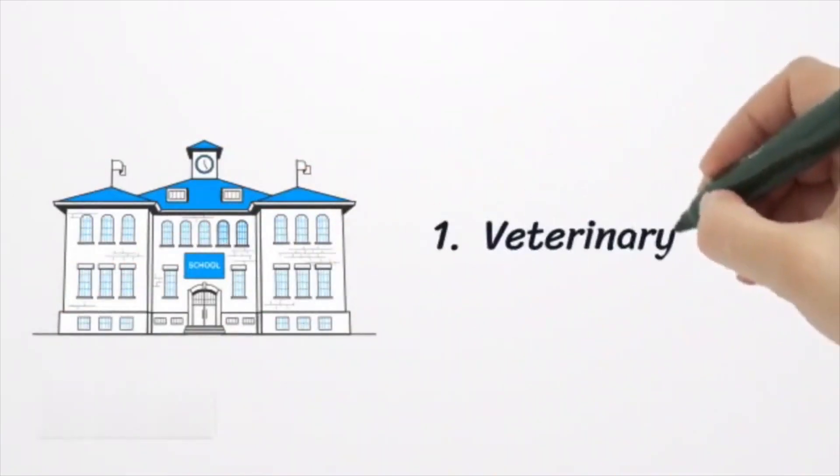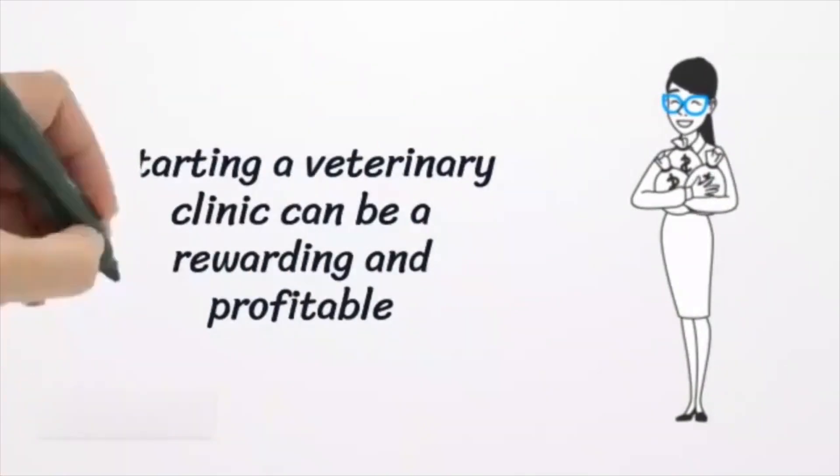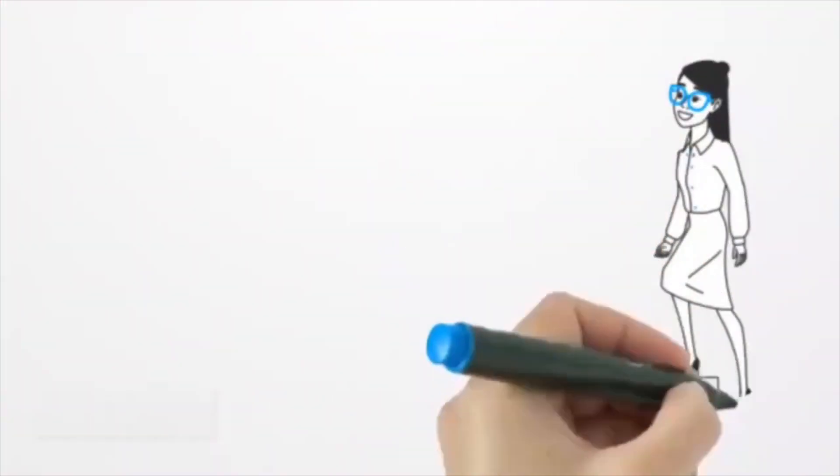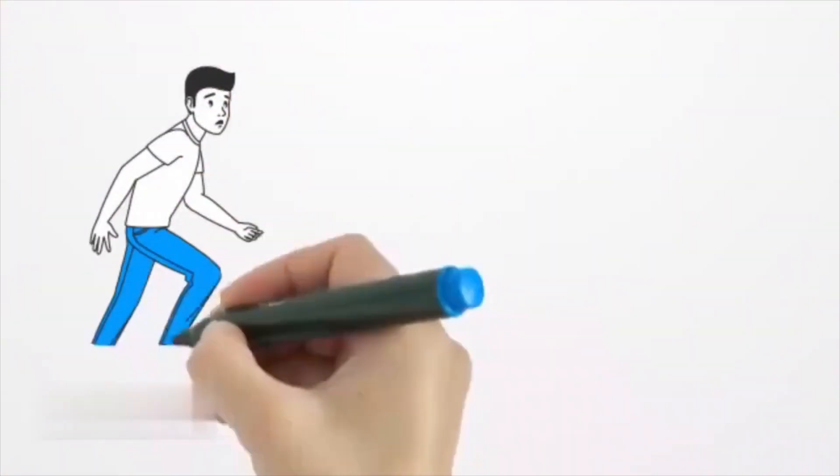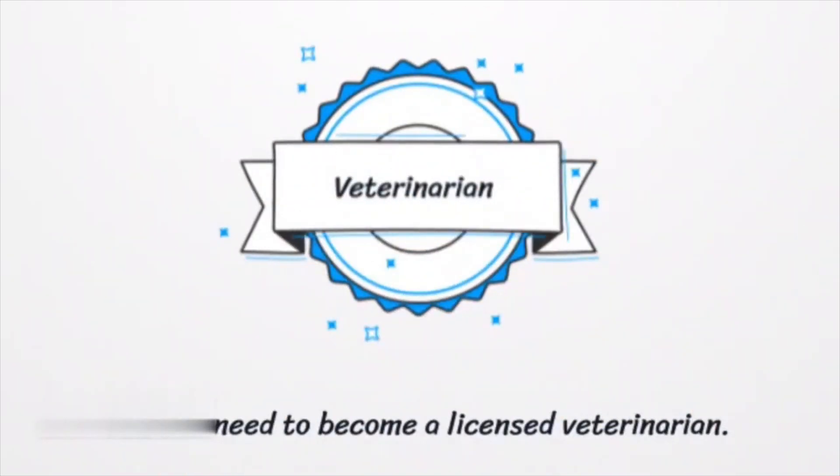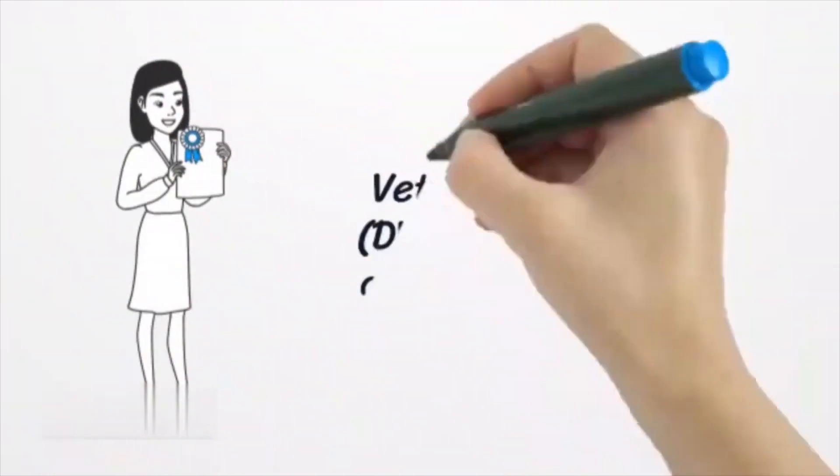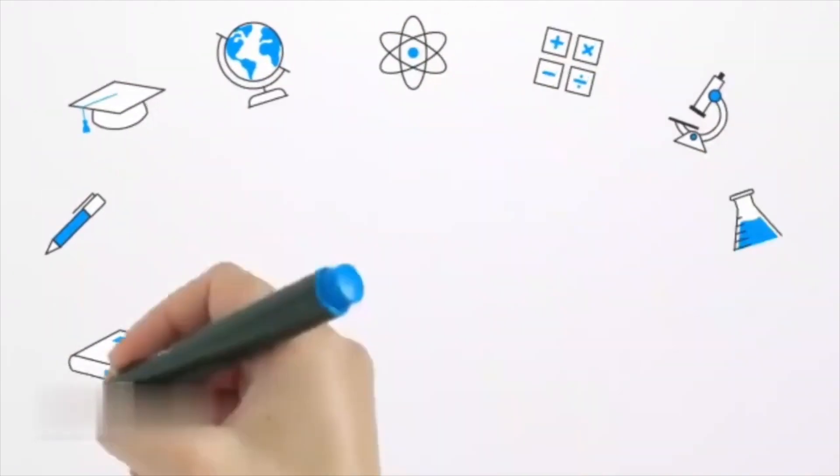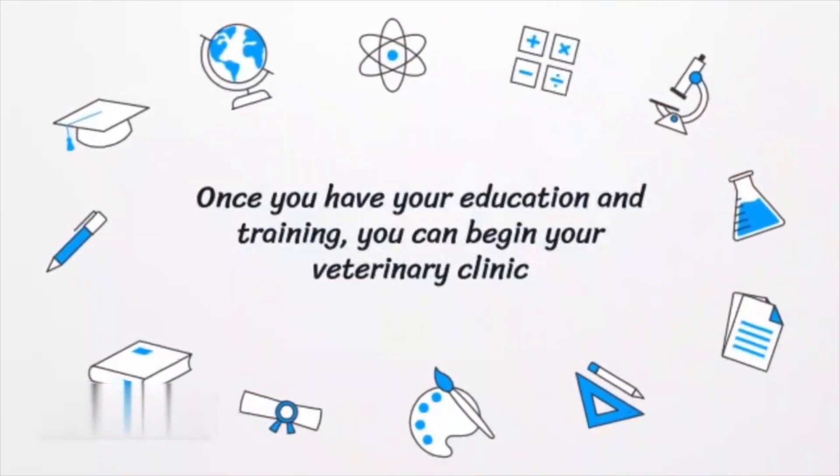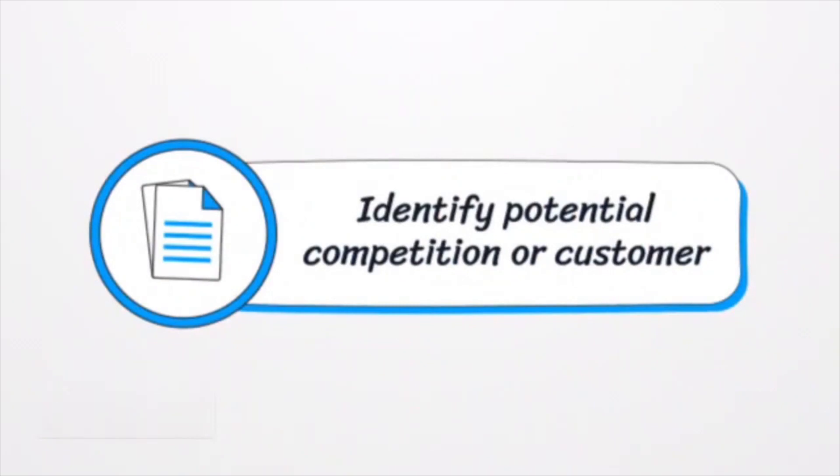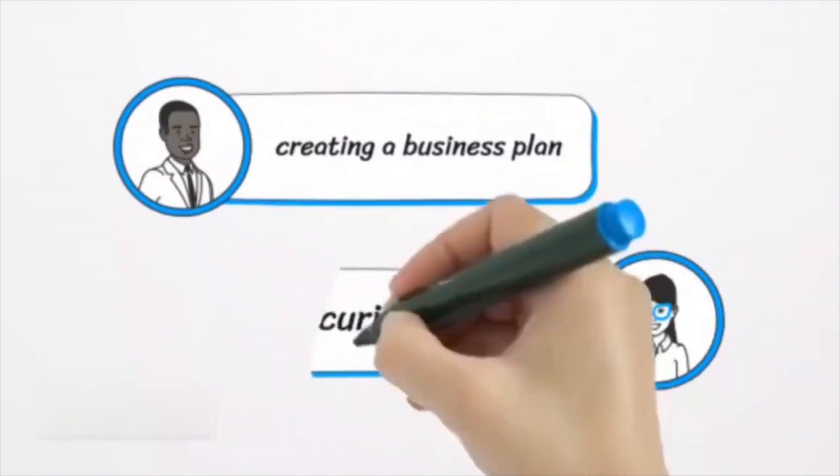Number 1. Veterinary Clinic. Starting a veterinary clinic can be a rewarding and profitable business opportunity for those with a passion for animal care and medicine. Here are some steps to help you get started. Education and Training: First and foremost, you'll need to become a licensed veterinarian. This requires a Doctor of Veterinary Medicine, DVM, degree from an accredited university, and passing the National Board Examination. Business Planning: Once you have your education and training, you can begin planning your veterinary clinic. This includes researching the local market to identify potential competition and customer needs, creating a business plan, and securing funding.